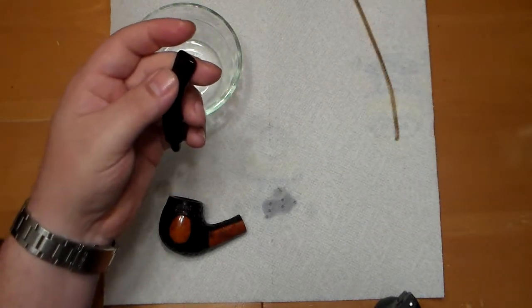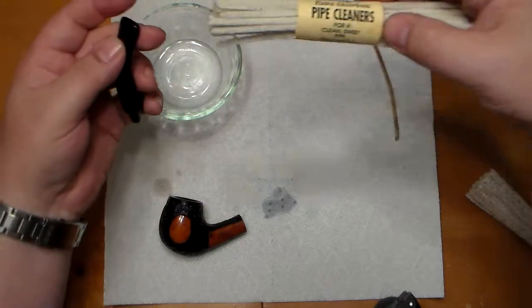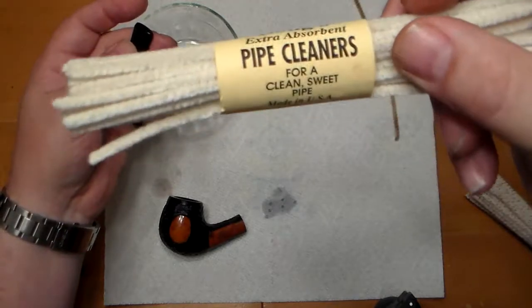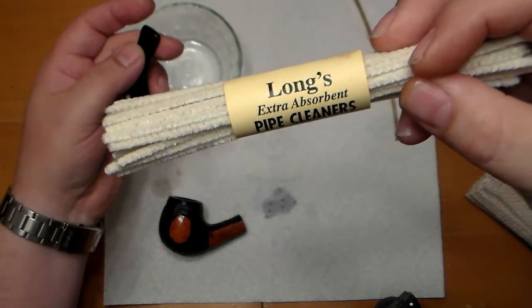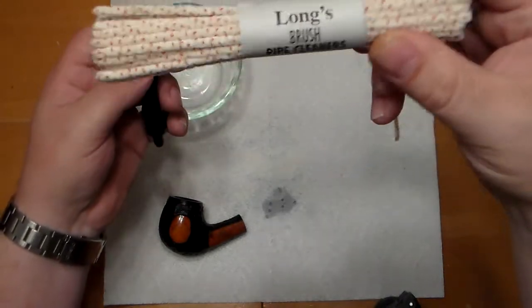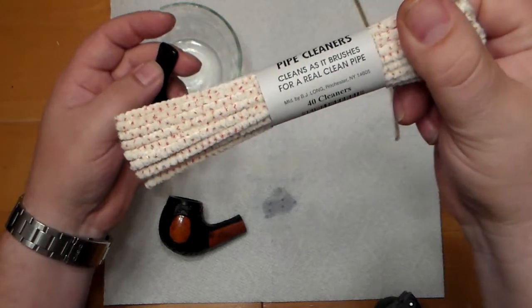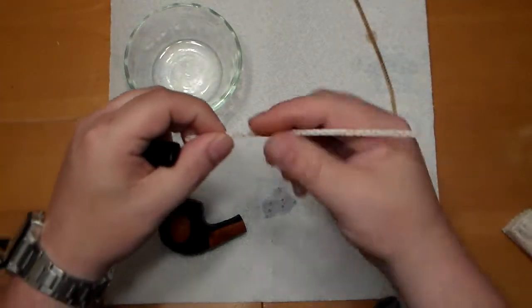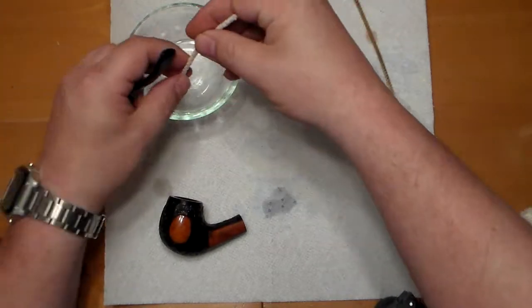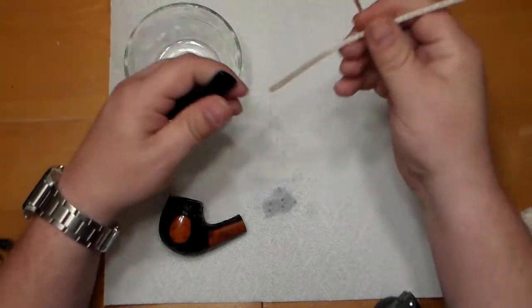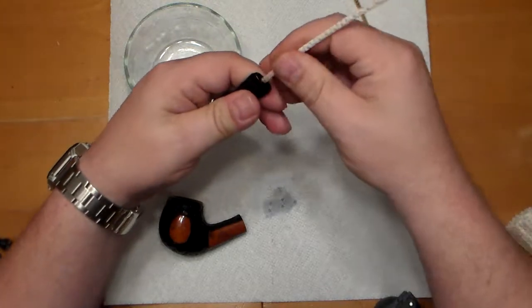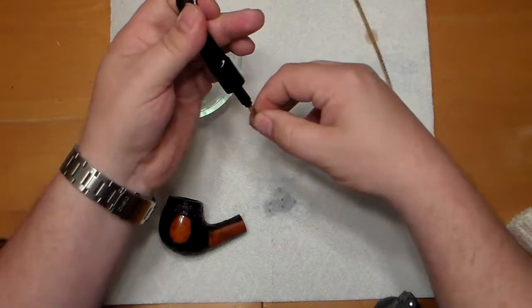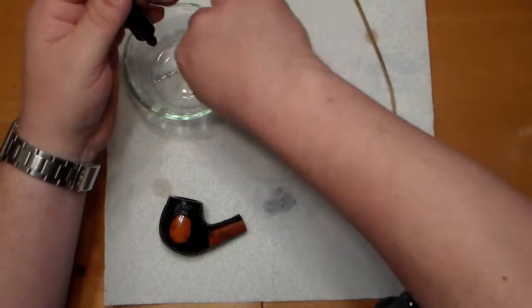That was just a regular fuzzy pipe cleaner. What I'm going to use next is a bristled pipe cleaner. They've got little bristles on them that help kind of scuff up the inside a little bit and knock some of that stuff loose. I need to watch so that I don't end up getting this alcohol on the outside of my pipe because it'll take the finish right off of it.